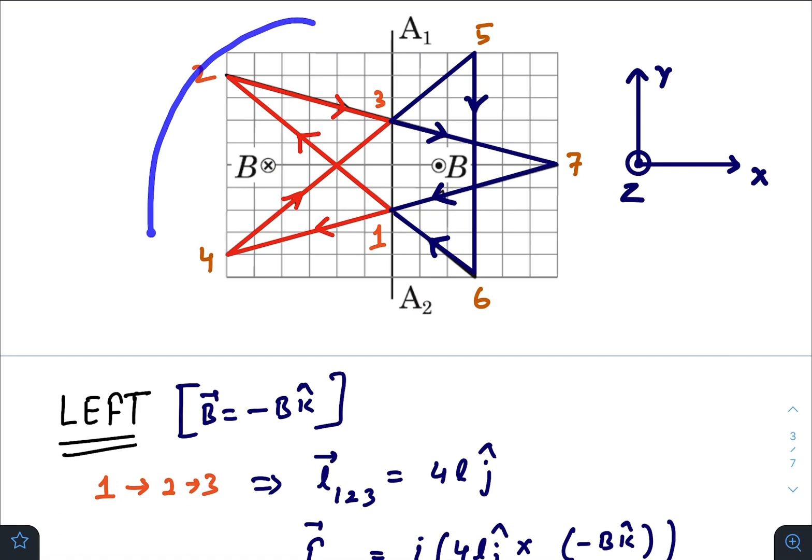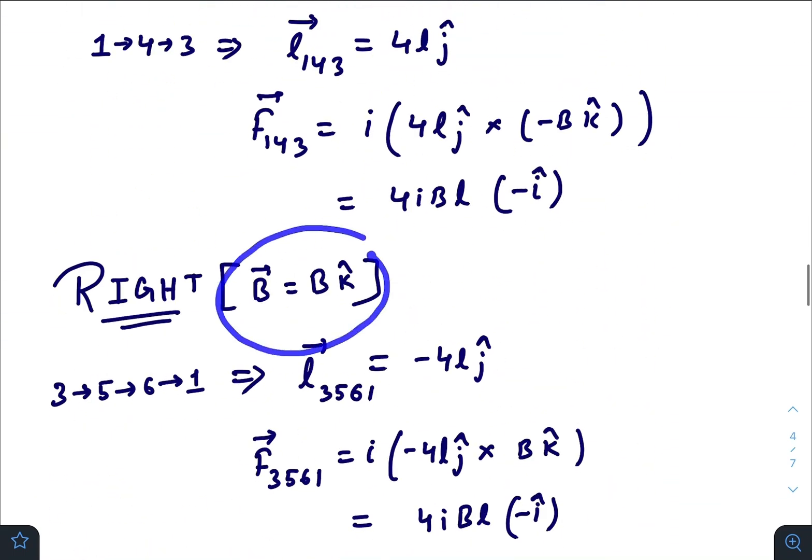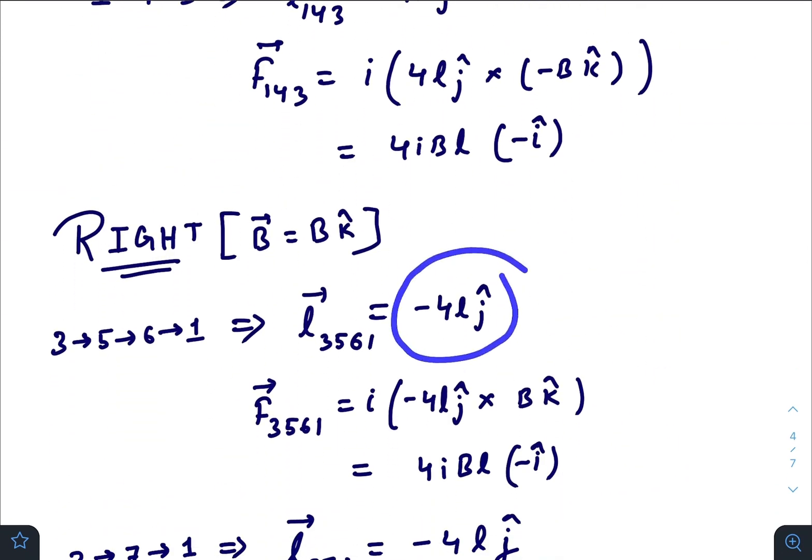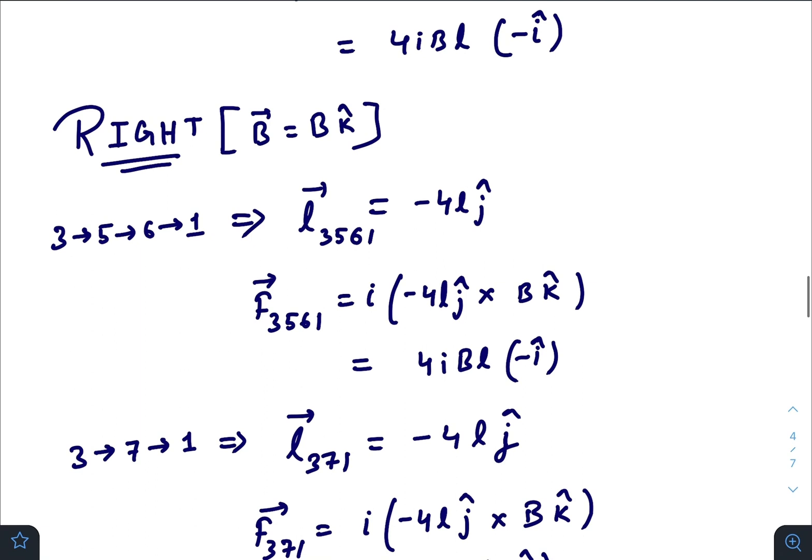Now for the right part, the magnetic field is coming out of the plane (B k̂). For path 3-5-6-1, which starts from here and ends here, the l vector is −4l ĵ. The force experienced is i(−4l ĵ) × (B k̂) = 4iBl(−î). For path 3-7-1, from beginning to ending point, we have −4l ĵ again, so i(−4l ĵ) × (B k̂) gives 4iBl(−î).